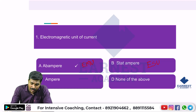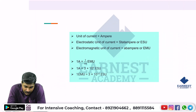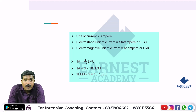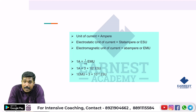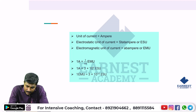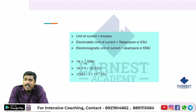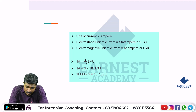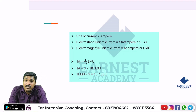Now for unit conversion: 1 Ampere is equal to 1/10 electromagnetic units. 1 Ampere is equal to 3 × 10⁹ electrostatic units (stat-Ampere). The conversion factor between electromagnetic and electrostatic units: 1 electromagnetic unit equals 3 × 10¹⁰ electrostatic units.